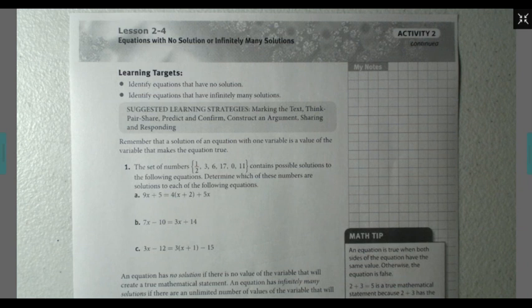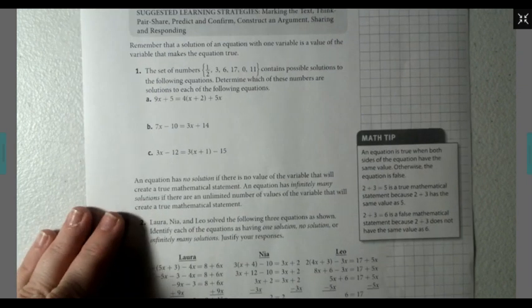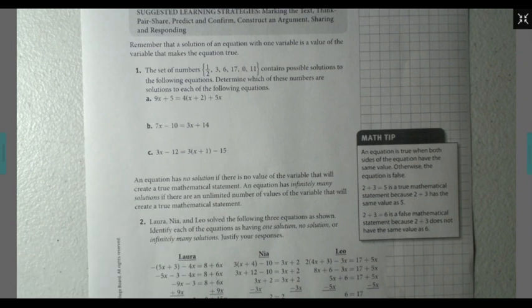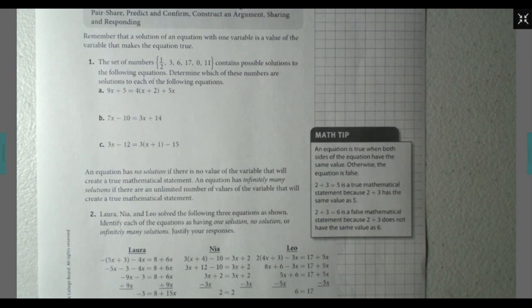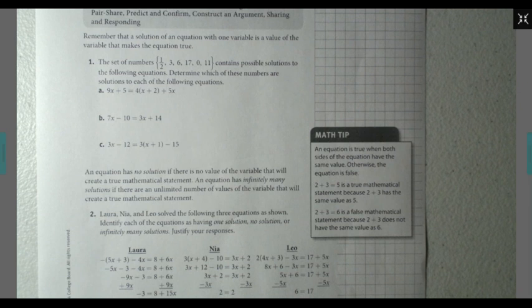On the previous slide, remember that a solution of an equation with one variable is a value of the variable that makes the equation true. An equation has no solution if there is no value of the variable that will create a true mathematical statement. An equation has infinitely many solutions if there are an unlimited number of values of a variable that will create a true mathematical statement. The math tip said: an equation is true when both sides have the same value. For instance, 2+3=5 is true; 2+3=6 is false.